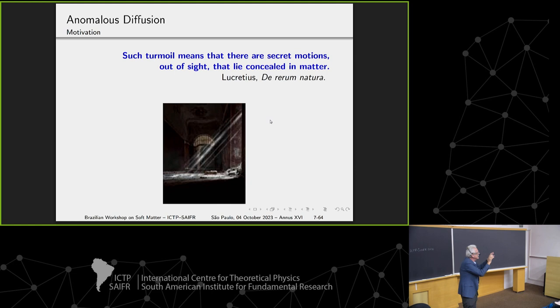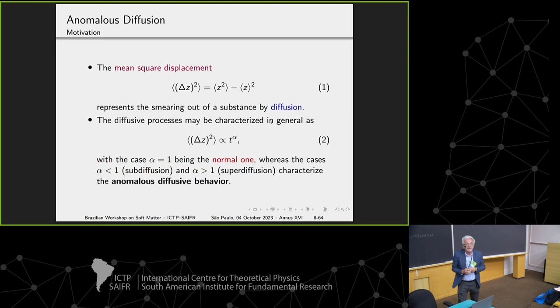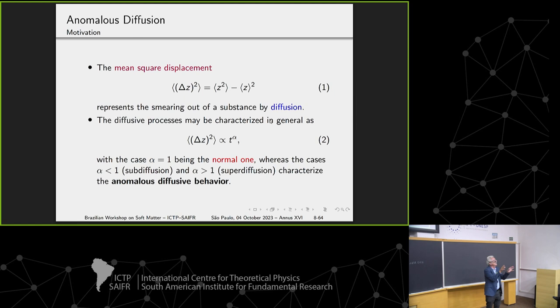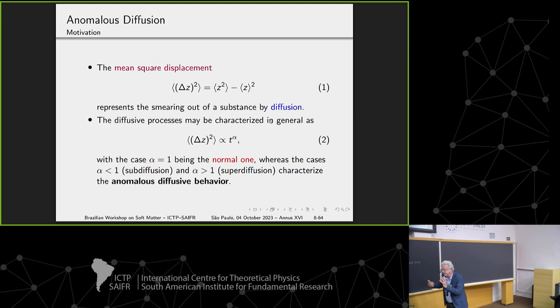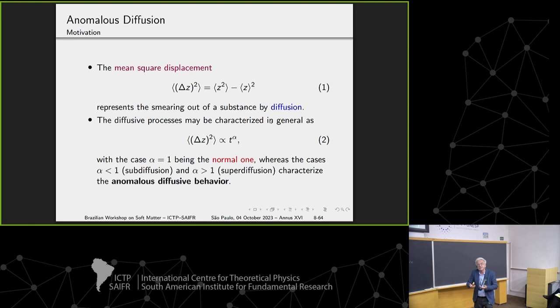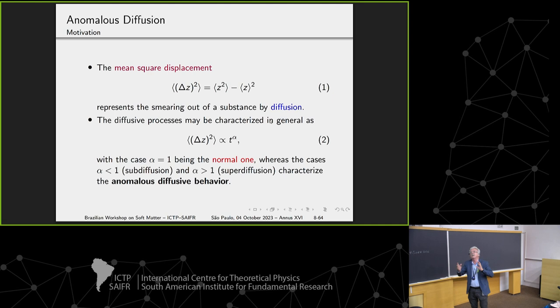A way to look for diffusion is to look at mean square displacement and how it depends on time. It depends on time as T to some exponent alpha. If alpha is one, we call it normal diffusion. According to the values of alpha, less than one or greater than one, we have anomalous diffusion.